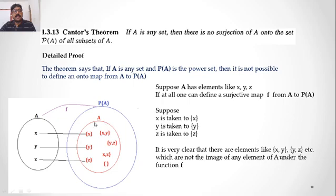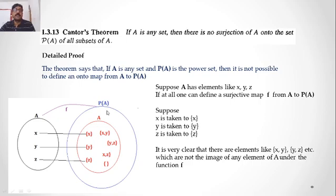Then it is very clear that there are some more subsets like {X,Y}, {Y,Z}, {X,Z}, etc., which are not the image of any elements of A. Also, if A has n elements, then P(A) consists of 2 raised to n elements. So from this example, it is clearly not possible to define a surjection from A to P(A).